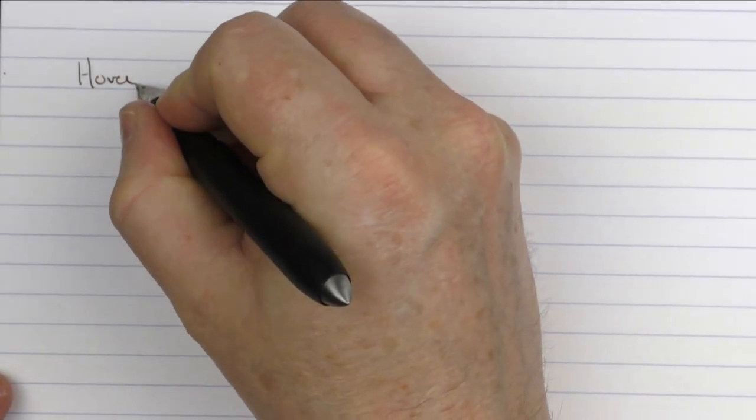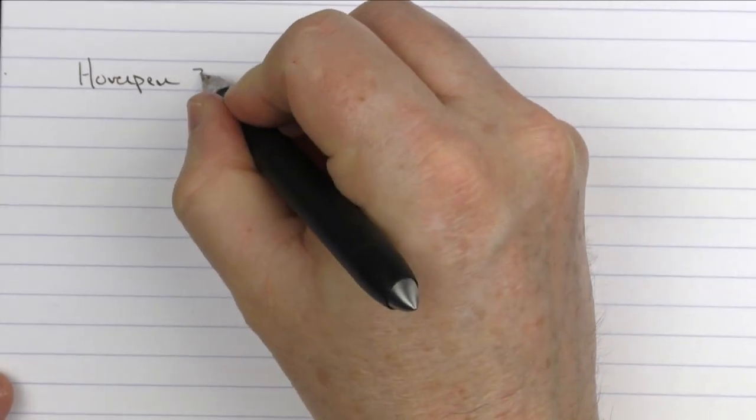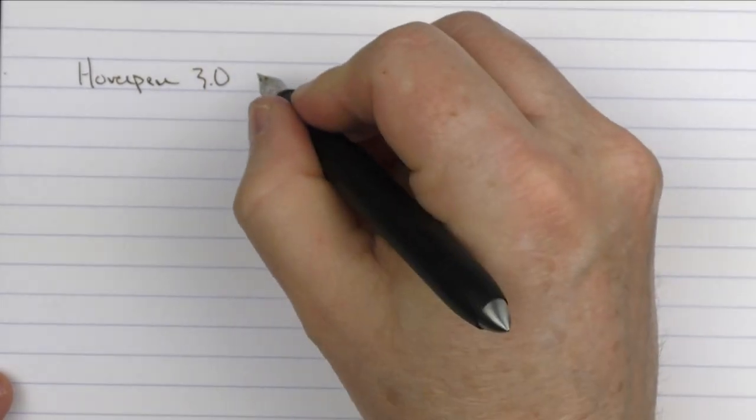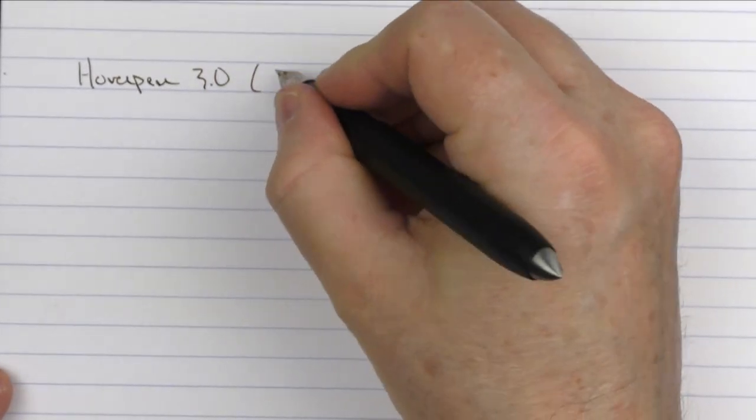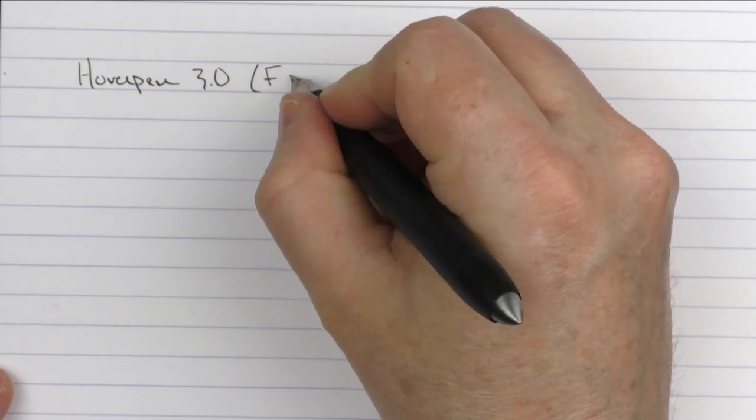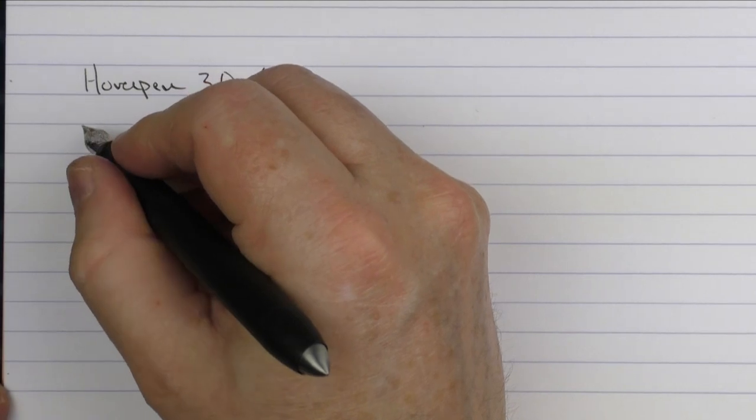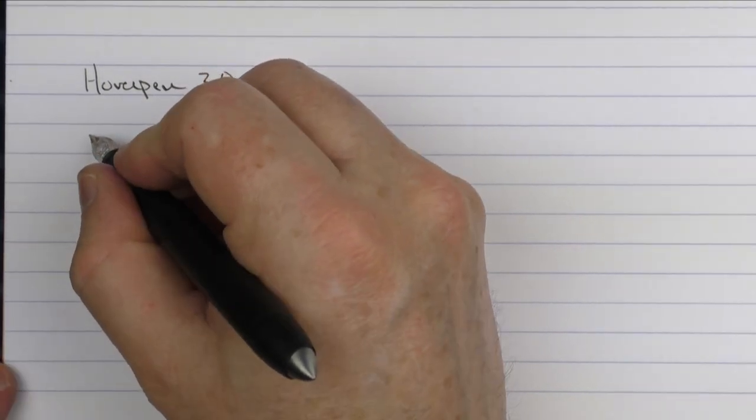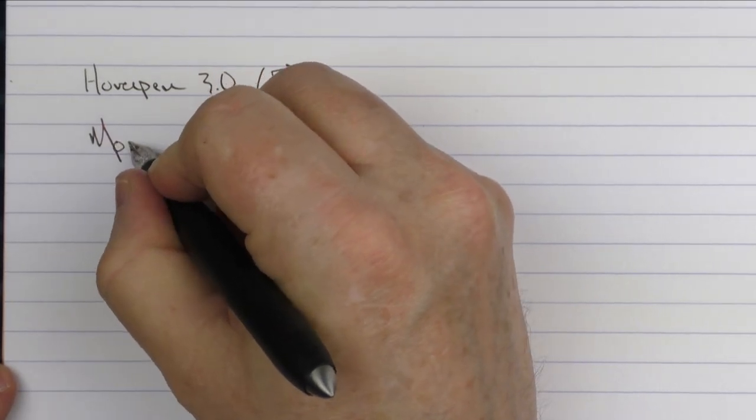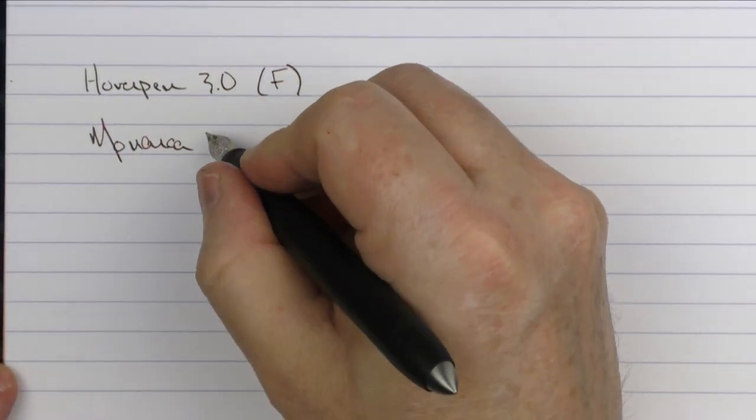So here we go with the writing sample for the Hoverpen 3.0, and this is a stainless steel nib, and it is fine. And the ink I'm using today is a new ink that I'm really excited about, which is Monarcha Cardona.